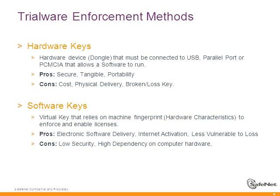Regardless of how you look at it, trial enforcement comes down to one of two ways. One is hardware keys — the most common terminology is the dongle — a physical device connected to the USB, a parallel port, or PCMCIA slot. Once connected, it allows the software to run. In trialware, the pros of a physical device include an additional layer of security, tangibility — customers can hold it and identify it — and portability.